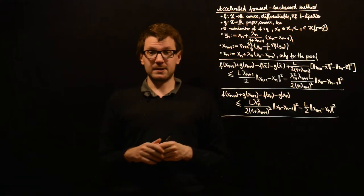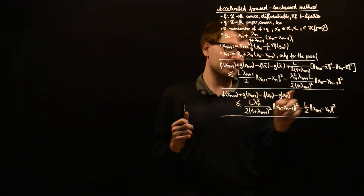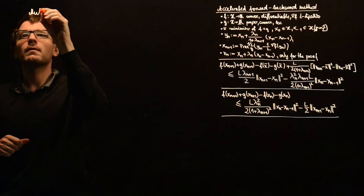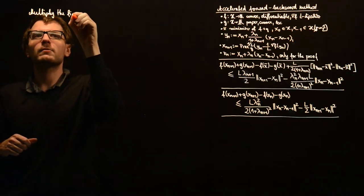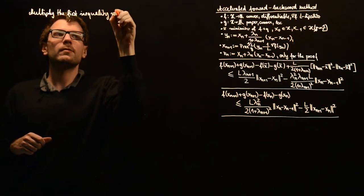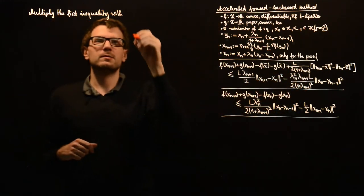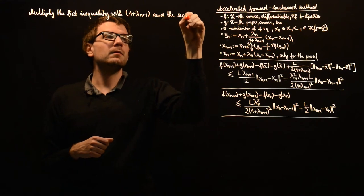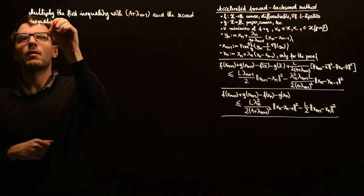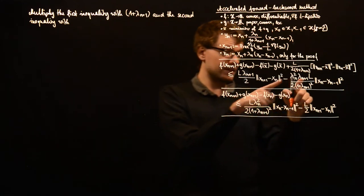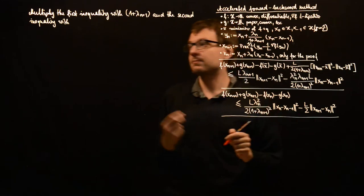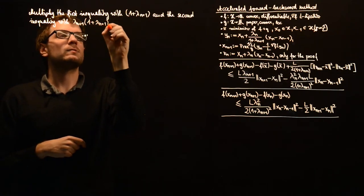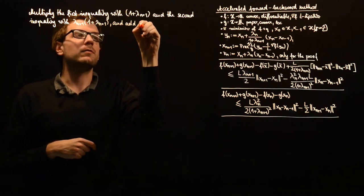To combine these inequalities, it would be advantageous if these terms — which we are not really interested in — just cancel out. To do this, we multiply the first inequality by the factor (1 + λ_{n+1}) and the second inequality by λ_{n+1} times (1 + λ_{n+1}), and add the results.